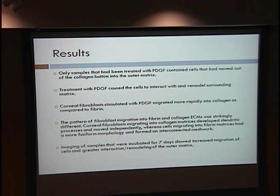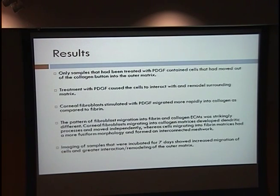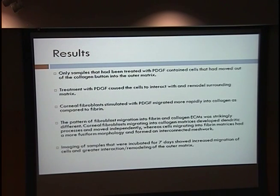Corneal fibroblasts migrating into collagen developed dendritic processes and moved independently, whereas cells migrating into fibrin had a more fusiform morphology and formed interconnected bridges out into the fibrin, working together. Imaging after seven days showed increased migration and more remodeling of the surrounding matrix, which makes sense as the cells had more time.